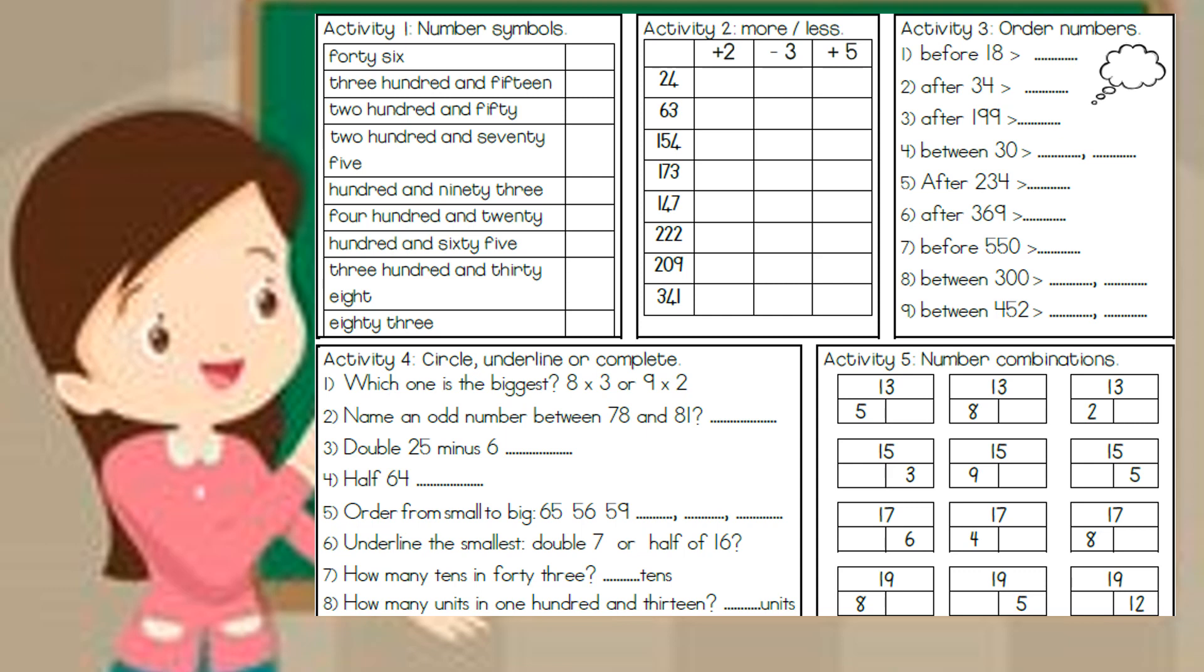Then at activity 3, order numbers. You have to tell me the number before and the number after. Once again, don't get scared if it's bigger numbers. Look at the number. For instance, number 7. What is the number before 550? You all know what the number is before 50. So just think about that. And then apply it to this answer.